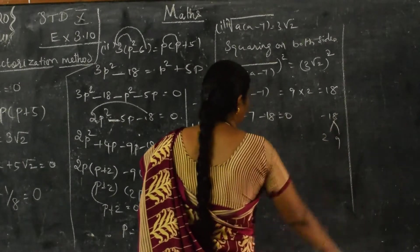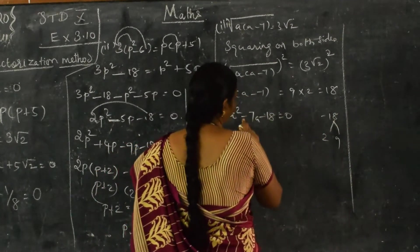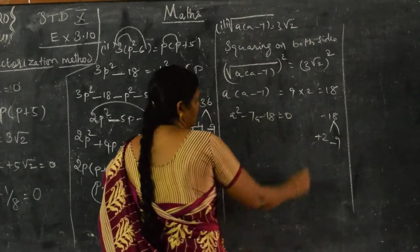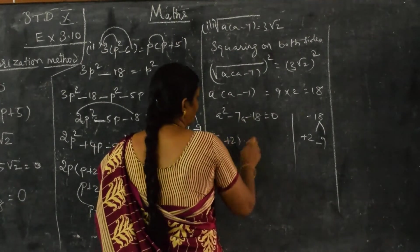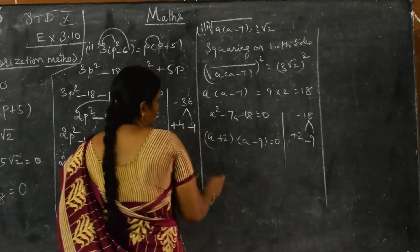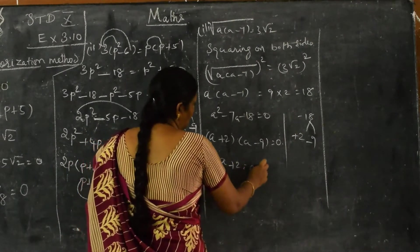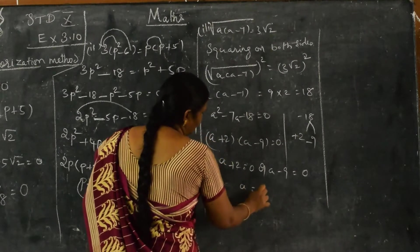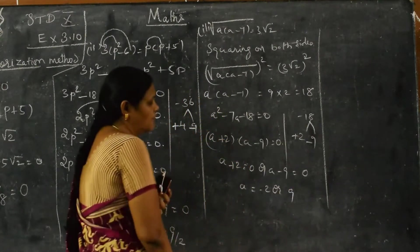So a² - 7a = 18. Bringing 18 to the left: a² - 7a - 18 = 0. Splitting 18 as 2 and 9, put minus on the greater number: (a + 2)(a - 9) = 0. So either a + 2 = 0 or a - 9 = 0, giving a = -2 or a = 9.